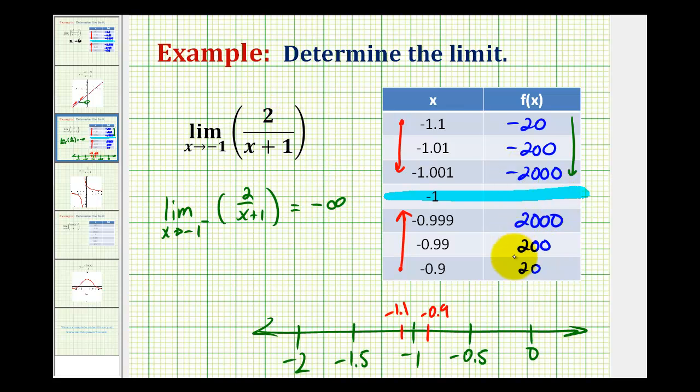And then if we look at the values approaching negative 1 from the right, notice how they're increasing without bound, so they're approaching positive infinity, which tells us the limit as x approaches negative 1 to the positive side, or right side, of 2 divided by the quantity x plus 1 is equal to positive infinity.